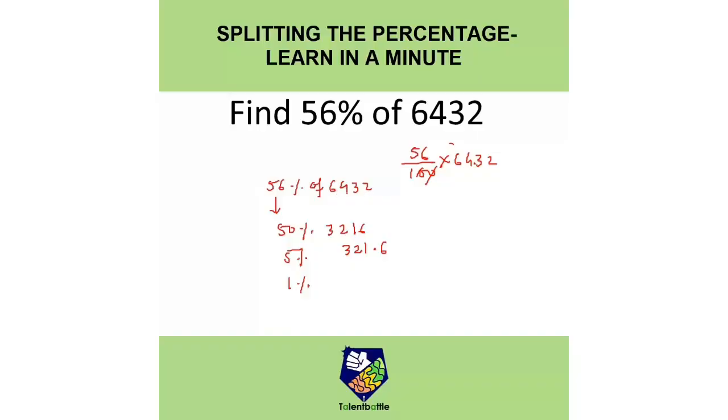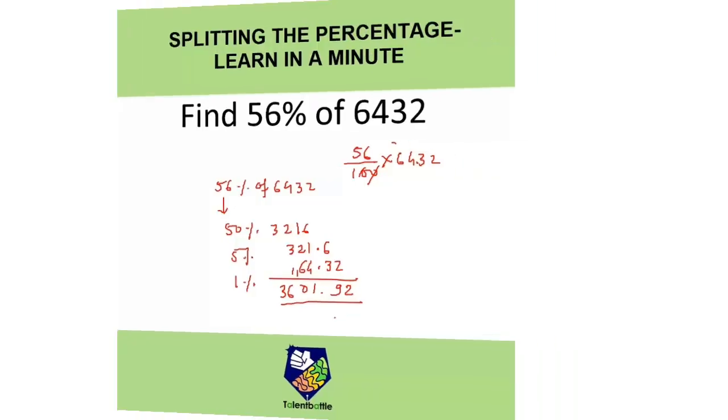And we need to find 1%. 6432, 10% will be 643.2, so 1% of 6432 will be 64.32. So we have to just add this. So this will be 3601.92. So in such way you can solve this particular problem easily.